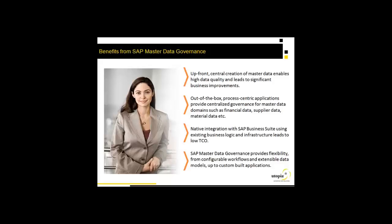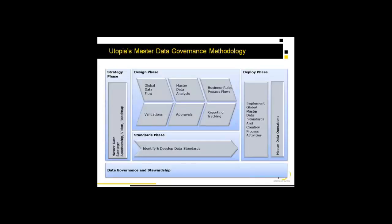It's about making sure that the right data going into the production system is right. When we at Utopia do an implementation of MDG or any master data solution, the first thing we look at is a strategy phase. We want to get our arms around the integrity of the data — that profiling dimension. We want to understand the business climate: who is responsible for the data, who has the vision, who has the roadmap, who are the trustees.